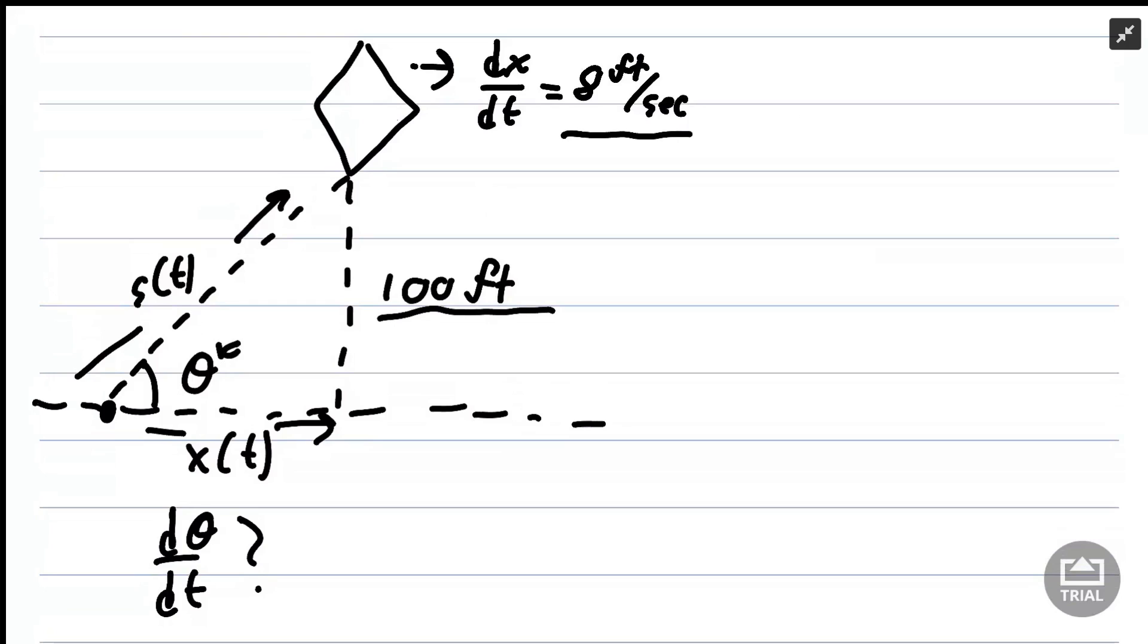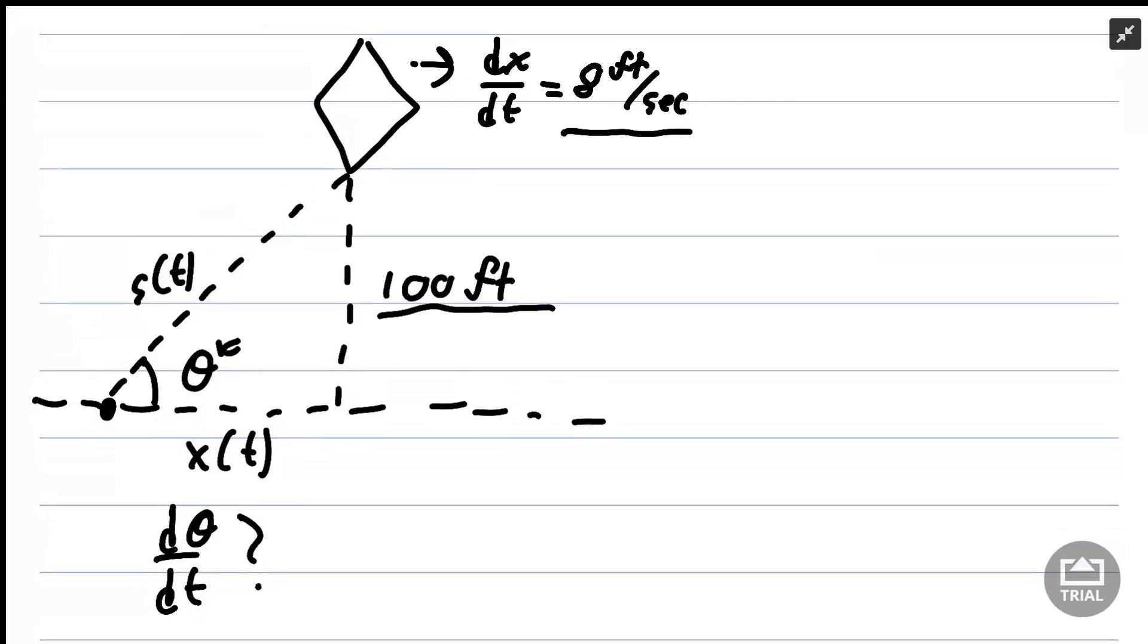We want to know what dθ/dt is when s(t) is 150 feet. I've written our two side lengths x and s(t) as functions of time because we know that the kite is moving, so the string length and the horizontal distance will be changing with time.